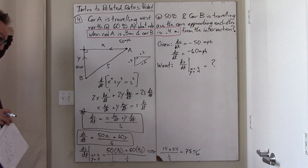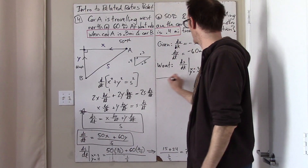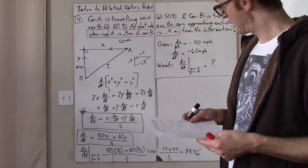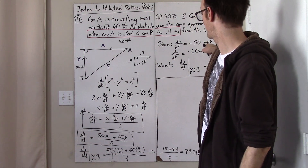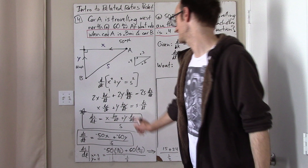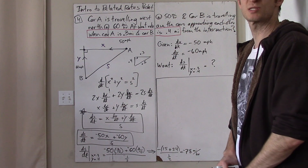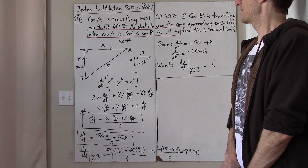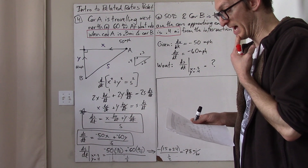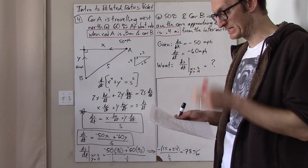Adding the negatives properly: dx/dt is -50 and dy/dt is -60, which makes the answer -78 miles per hour — which is just another way of saying that A and B are getting closer to each other. The follow-up question is: which car gets to the intersection first, and by how many seconds do the cars miss crashing into each other?